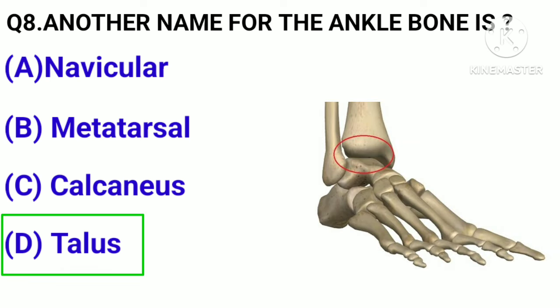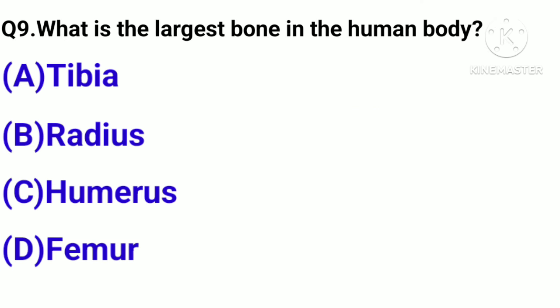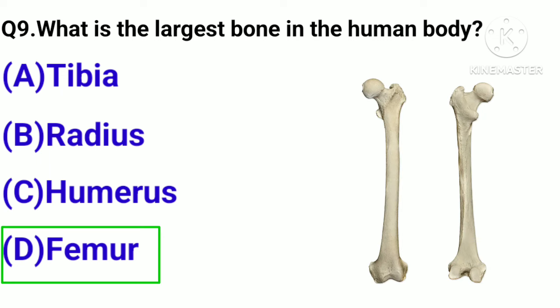Question number 9. What is the largest bone in the human body? Option A, Tibia. B, Radius. C, Humerus. D, Femur. Correct answer: Option D, Femur.